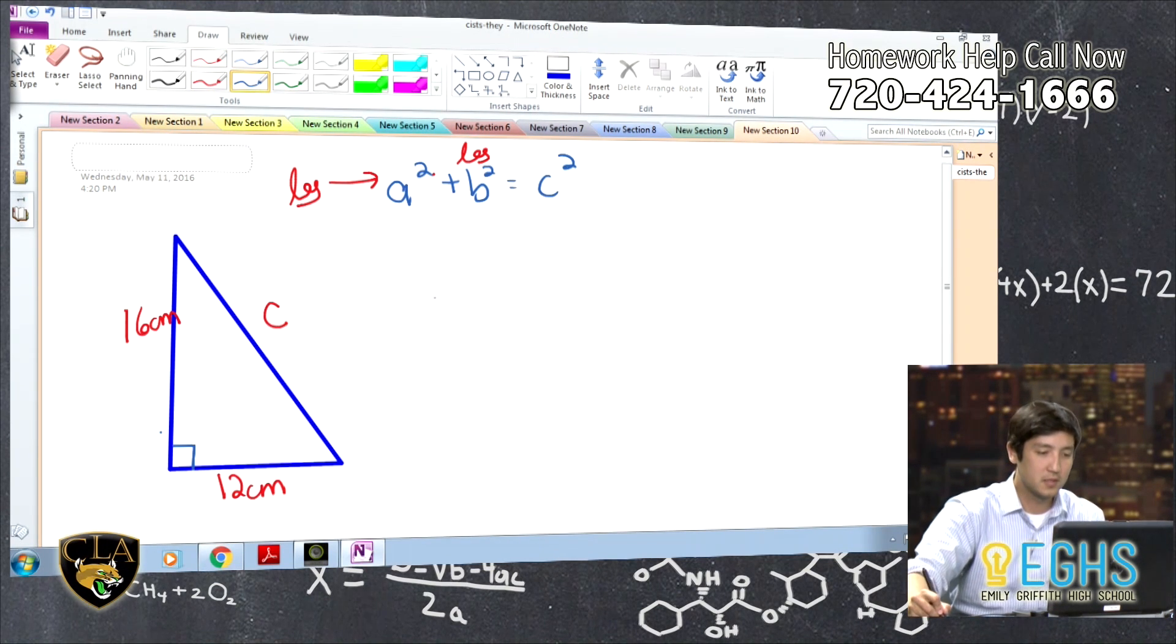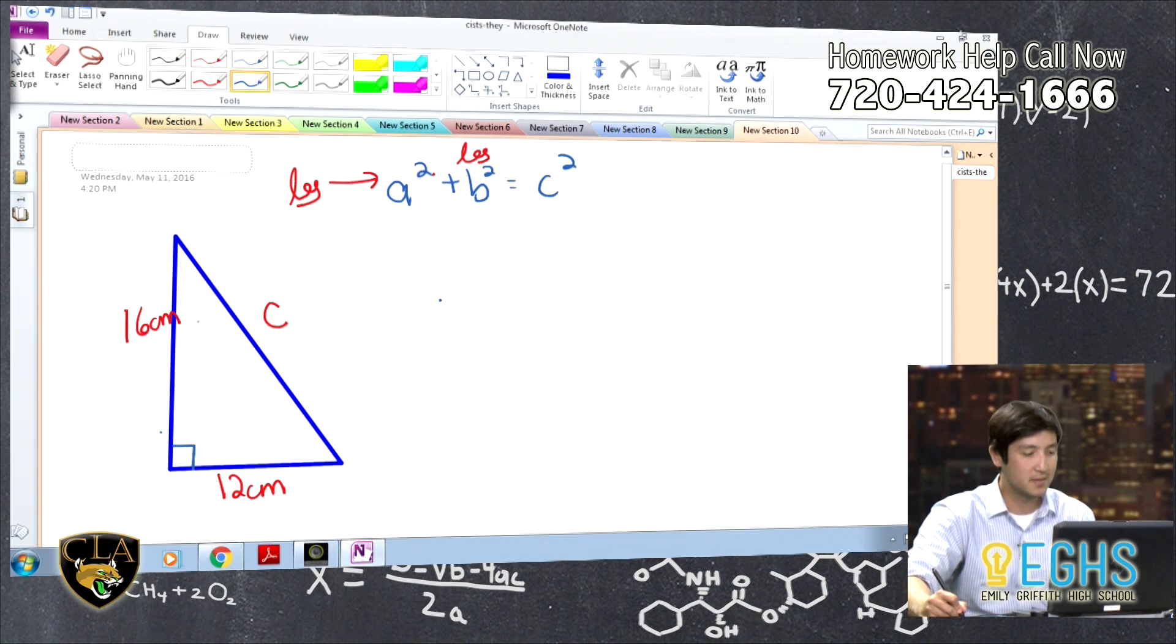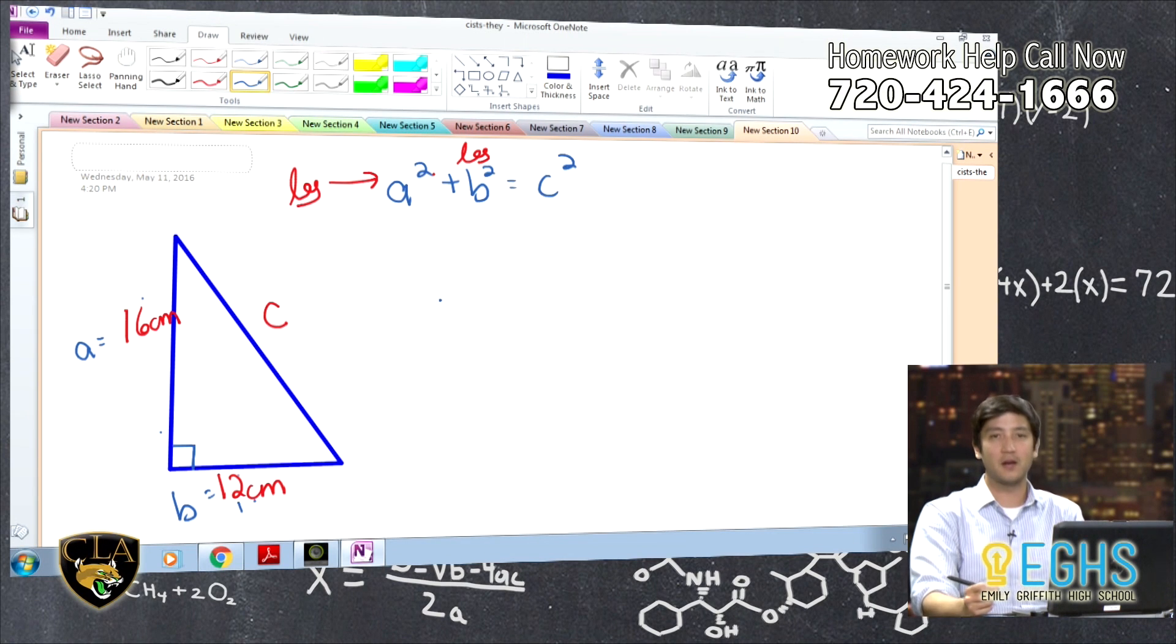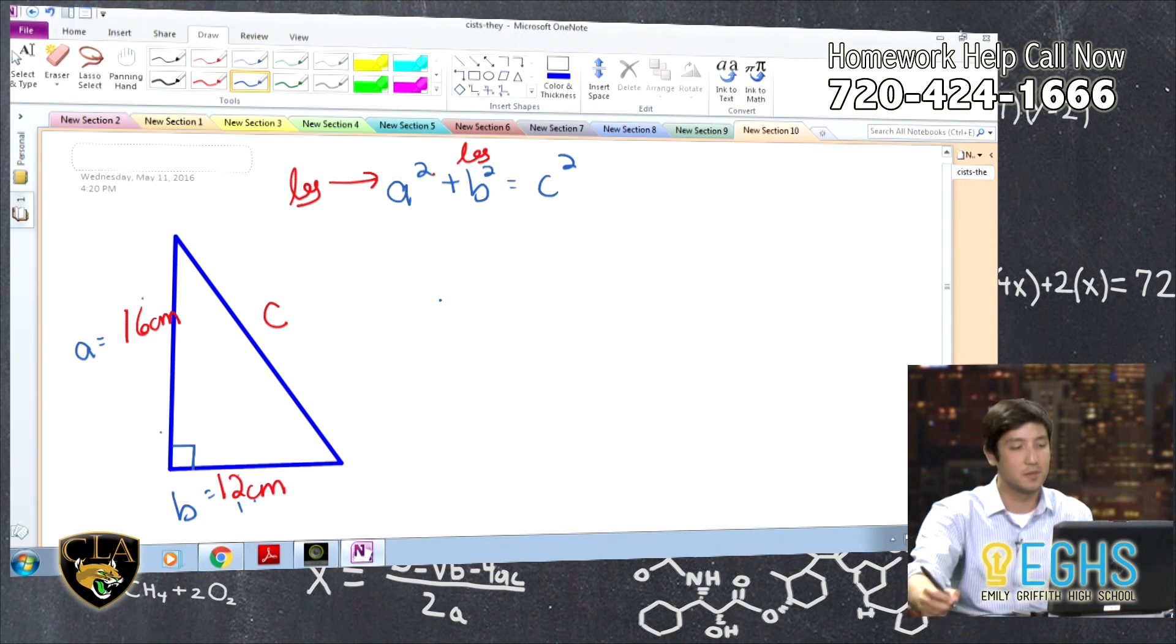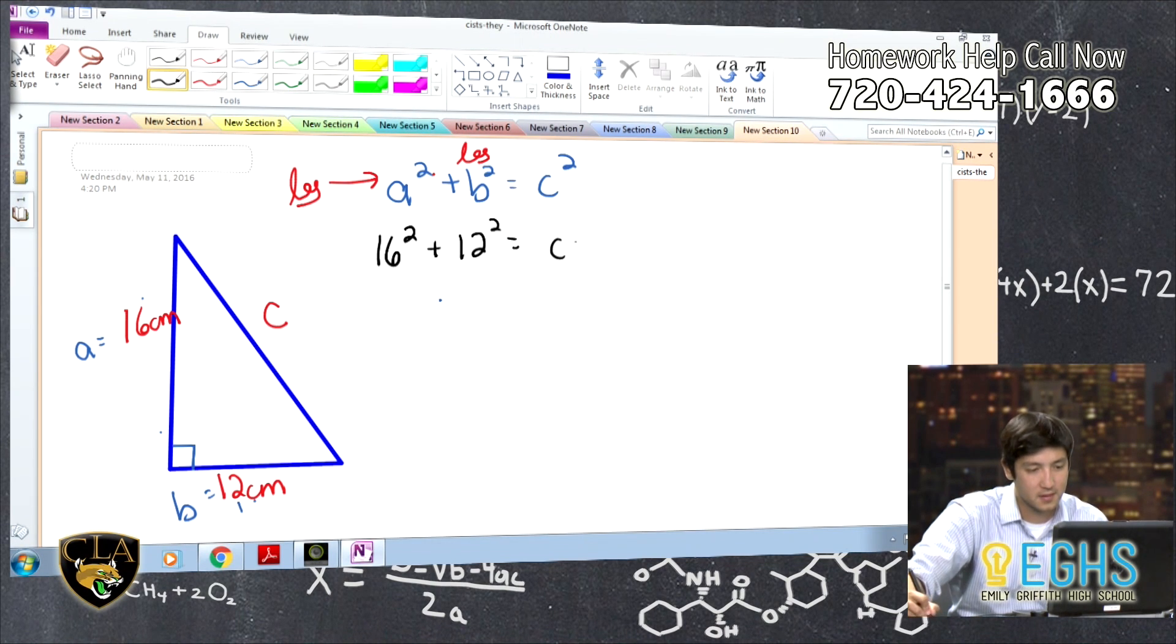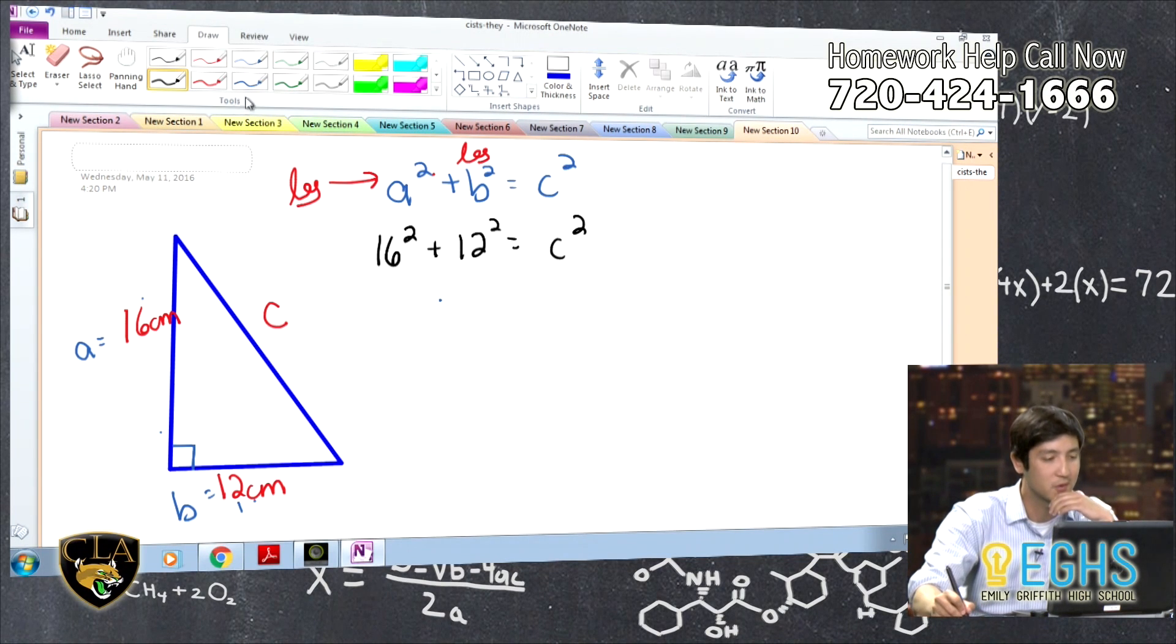So all we're going to do is plug this into our equation. It doesn't really matter which one you say is A, which one is B. So I could say that this is A, and I could say that this is B right here. The order for the legs doesn't really matter. The important thing is that the hypotenuse is on the side of the equation by itself. So all I'm going to do is plug this in, 16 squared plus 12 squared equals C squared. And then this just comes down to simplifying this equation and solving.